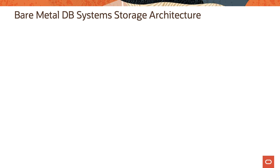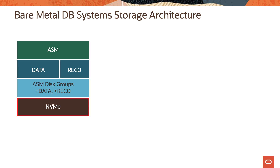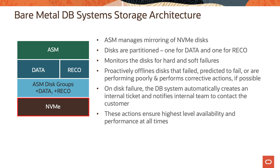Let's now look at the bare metal DB systems storage architecture. The bare metal DB systems rely on locally attached NVMe SSD drives. ASM uses these drives to carve out the data and REDO disk groups, and ASM manages the mirroring of the NVMe disks. ASM will monitor the disks for hard and soft failures, and it will proactively offline disks that have failed, are predicted to fail, or are performing poorly, and it performs corrective actions if possible. In the case of disk failure, the DB system automatically creates an internal ticket and notifies the internal team to contact the customer. These actions ensure the highest level of availability and performance at all times.